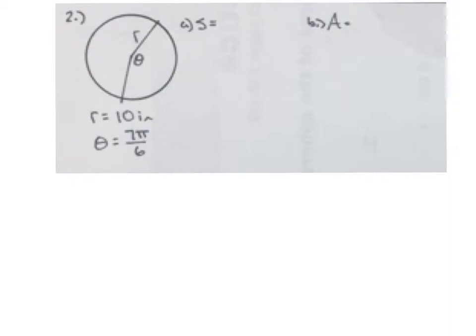It's understood in this problem that S is talking about the arc length, the length of this intercepted arc. And we just need to remember our formula, r theta, radius times radians.